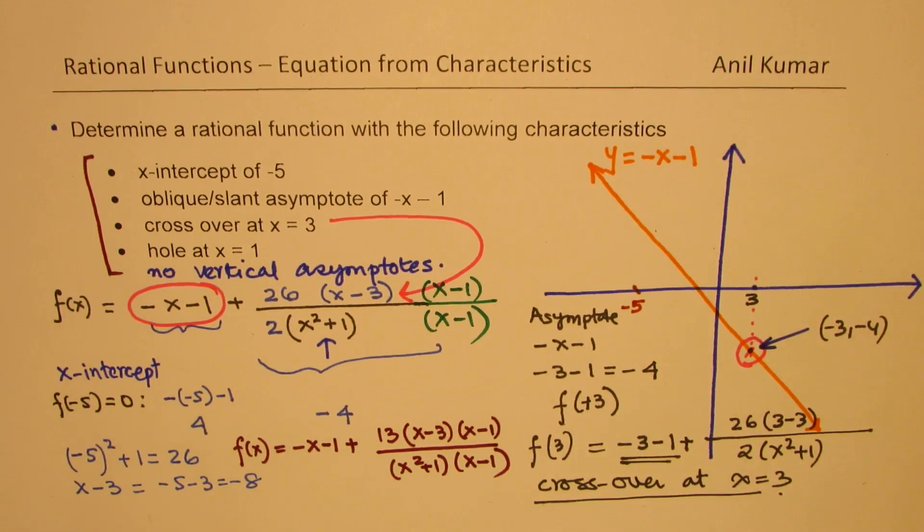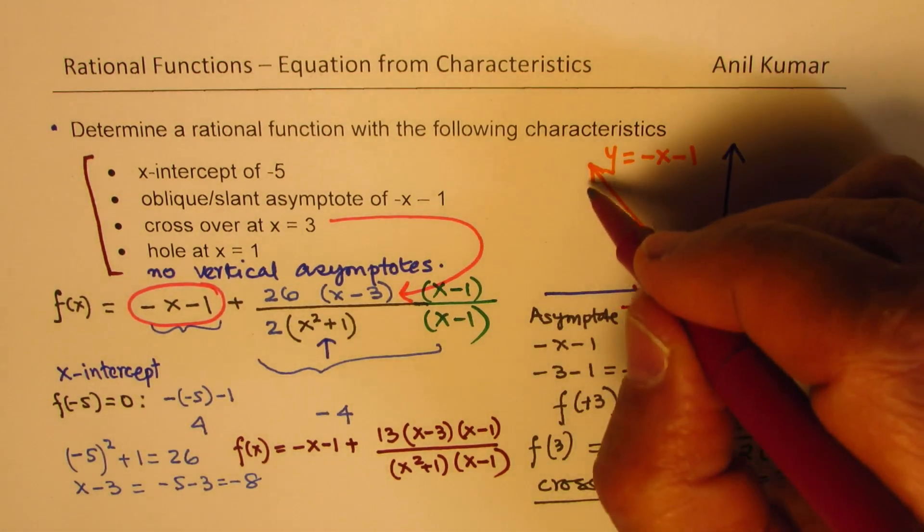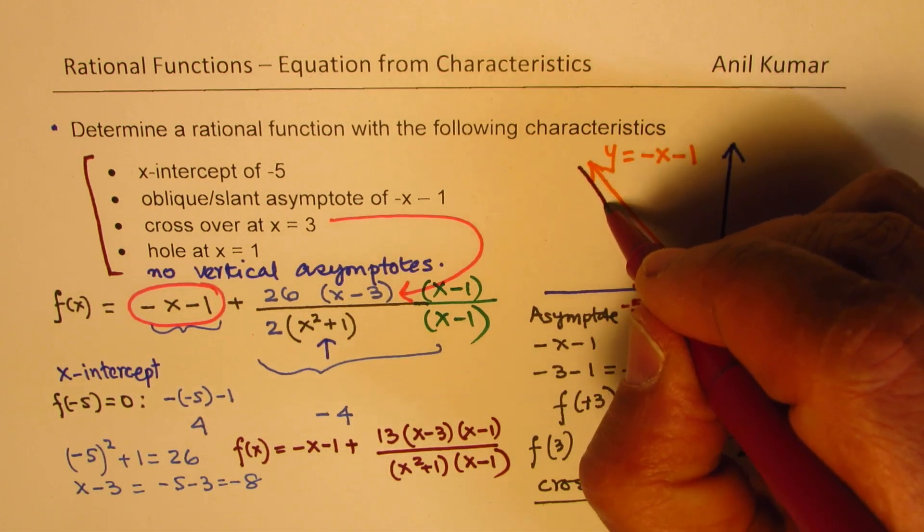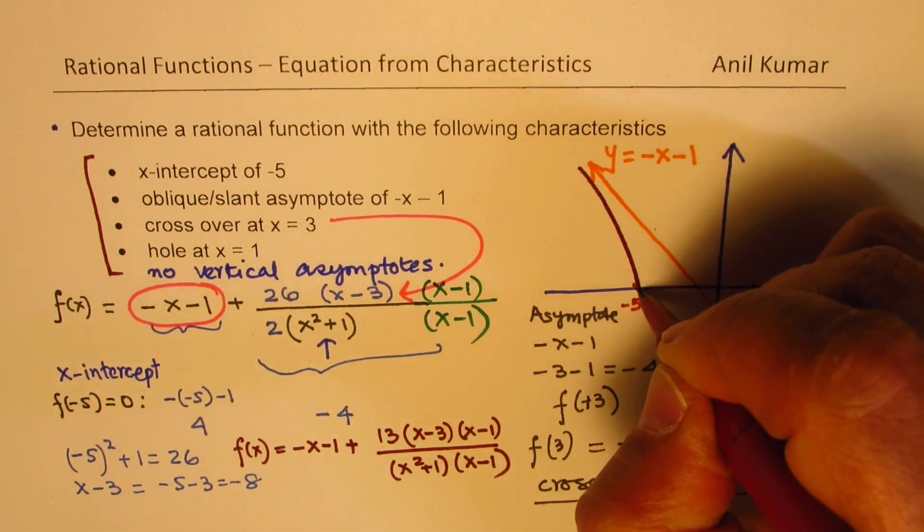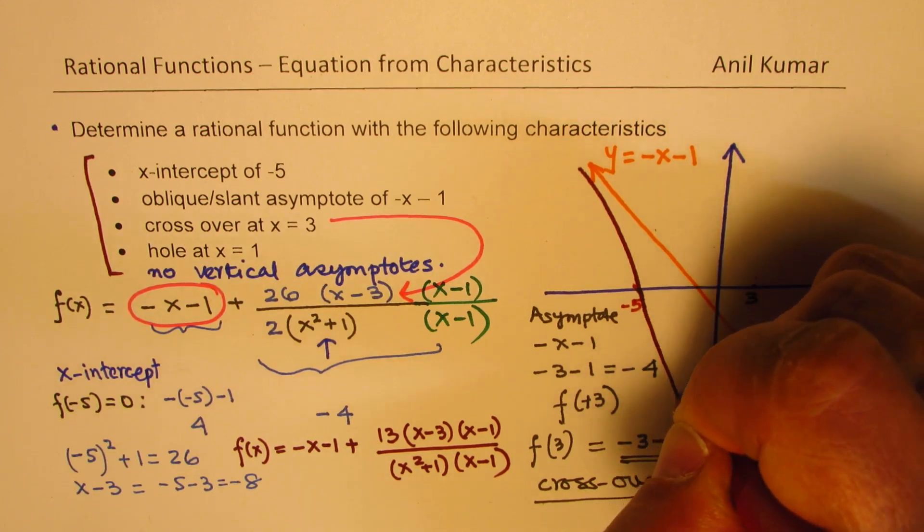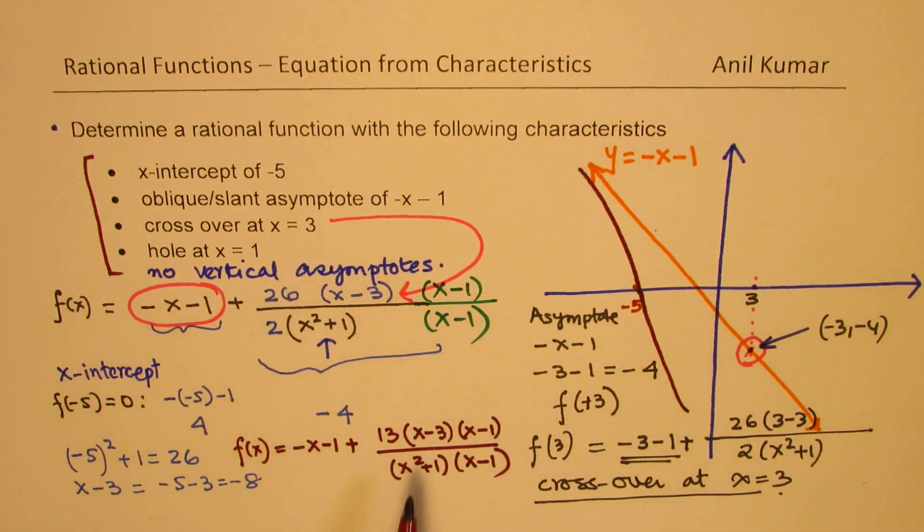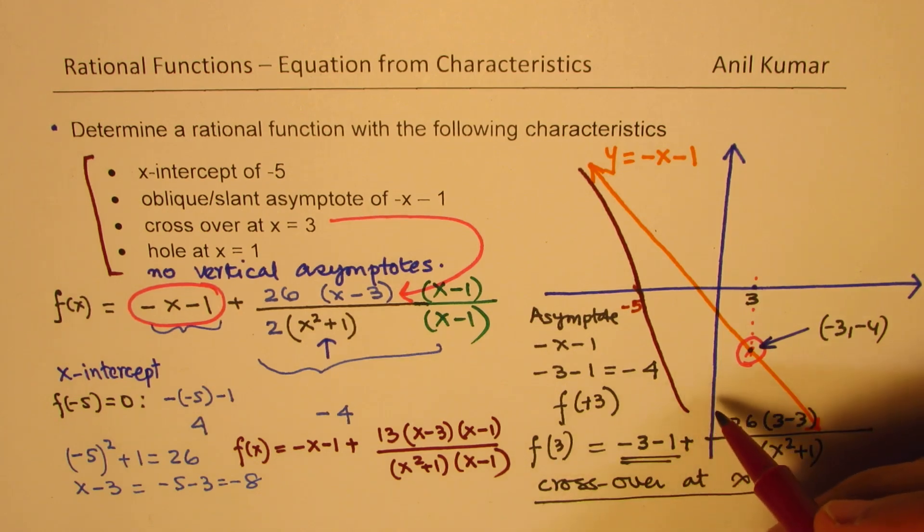So if you sketch this graph, it will be approaching here. It will grow through this. Somewhere down below, it is going to, we can always plug in 0 here for x and find a y-intercept.